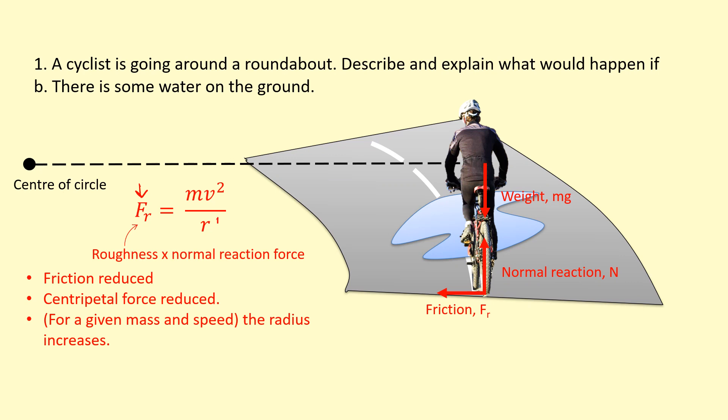So if we think of these as being constants, the radius is going to increase. So what's going to happen? He's just going to carry on continuing a straight line that will actually increase the radius.